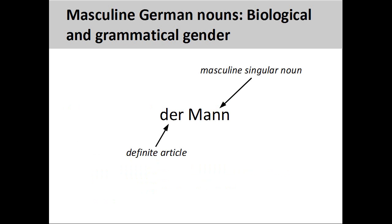You will recall from the presentation on German nouns that all singular nouns have a grammatical gender. This gender can be seen in the definite article. The biological gender of the noun 'man' agrees with its grammatical gender. The definite article 'der' shows that this is a masculine singular noun. When learning German, it is important to memorize the definite article with the noun.